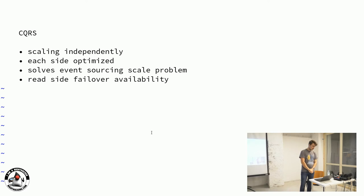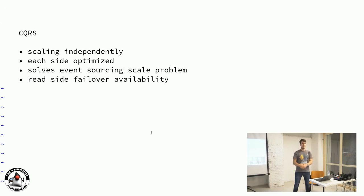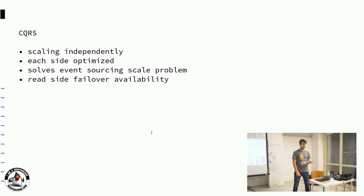By introducing CQRS you also get read-side failover capability. If your event hub goes down, in a CRUD-based world your database becomes unavailable and you can't do anything. But in a CQRS world, you can still read because all the read instances have their databases or caches available. They won't get updated because the event hub isn't firing new events, and you can't write because you can't publish new events reliably — but you can still read. That's a benefit compared to a CRUD-based world.